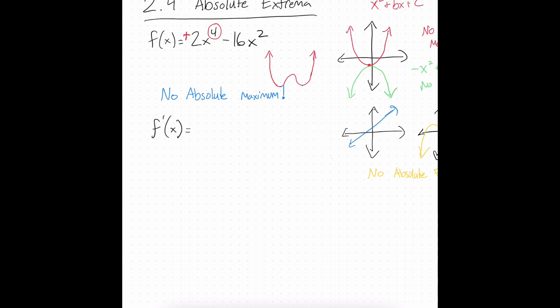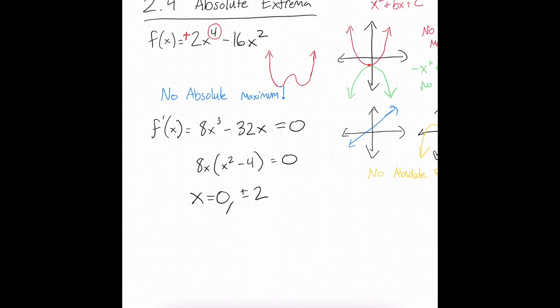I'm going to find my derivative: 8x cubed minus 32x. Set that equal to zero. I can factor — I can pull out an 8x, and I'm left with x squared minus 4. Solving both terms, I get critical points of zero and positive or negative 2. All three of those numbers, if I plug them into the derivative, I get zero.